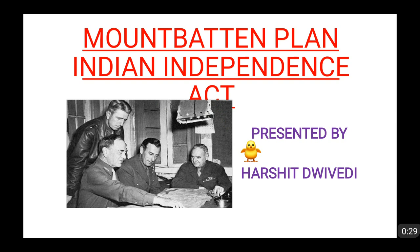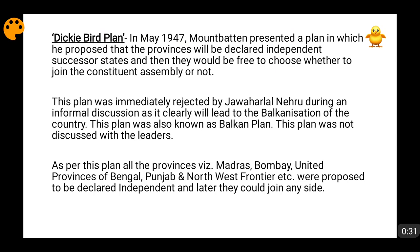Let's see what this Mountbatten Act is. Just before the Mountbatten Plan was produced, one plan named the Dickeybird Plan was produced. It was presented in May 1947, and in this Dickeybird Plan, Lord Mountbatten said that all the provinces of India should be declared independent. After these provinces are declared independent, they will be free to choose any unit they wanted to join.